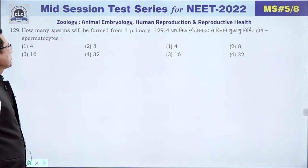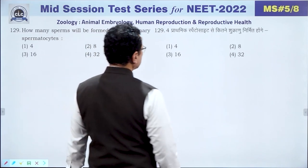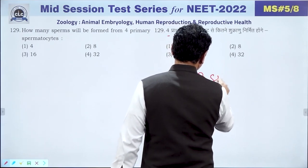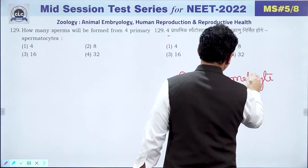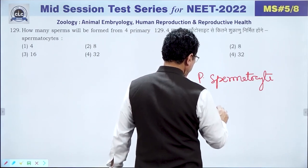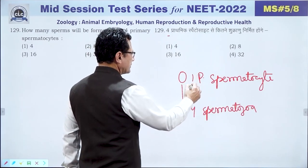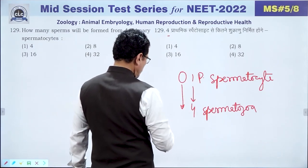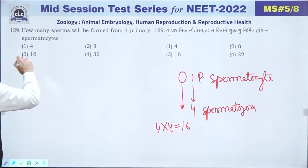Question 129: From four primary spermatocytes, each gives 4 spermatozoa, so 4 × 4 = 16 spermatozoa total. The answer is 16 (option 3).